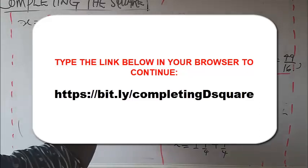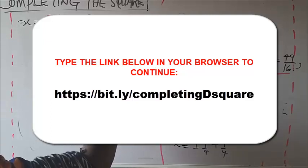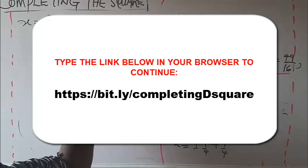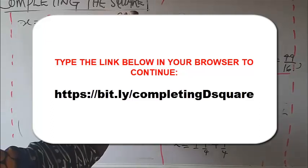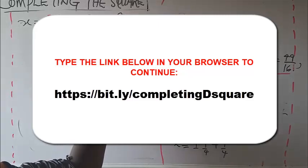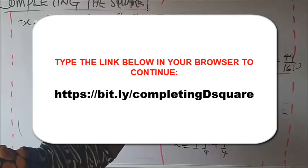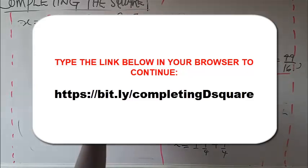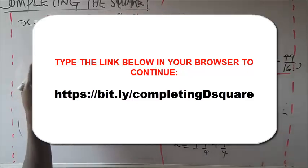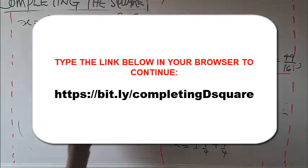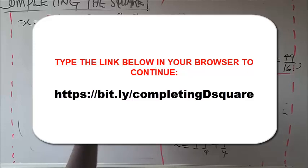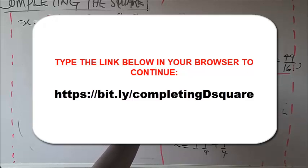The LCM is 4. For the first case: 9 plus 7 equals 16, so x equals 16/4 which is 4. For the second case: minus 9 plus 7 equals minus 2, so x equals minus 2/4, which simplifies to minus 1/2.